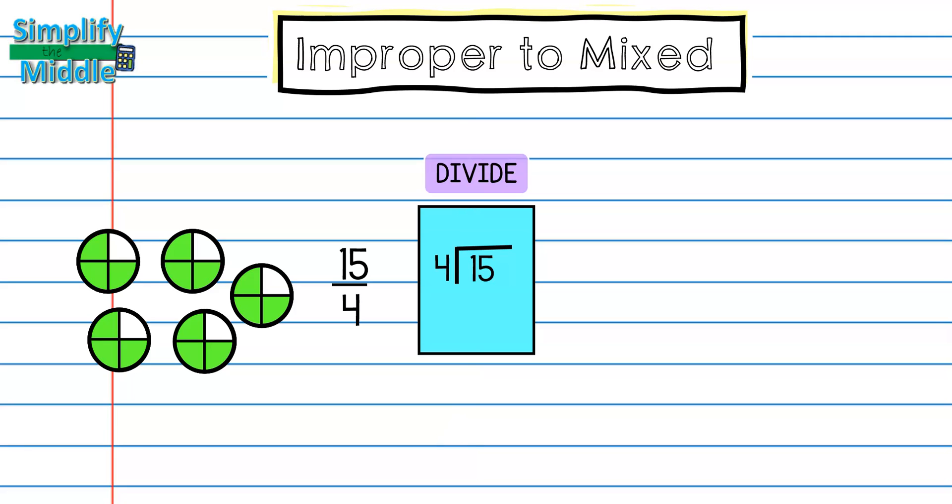And I'm basically asking myself how many full boxes can I make with 15 pieces. So 15... 4 goes into 15 three times, so 3 times 4 is 12, so I'm going to subtract 12 and I end up with a remainder of 3.